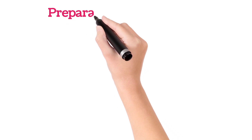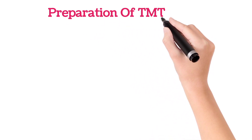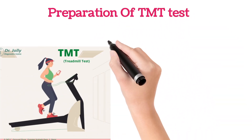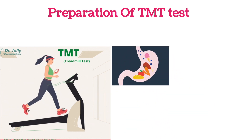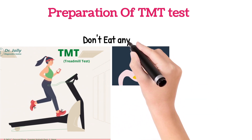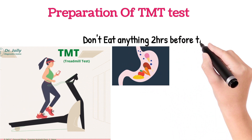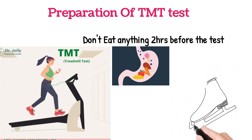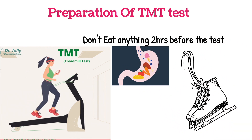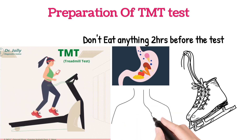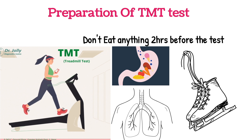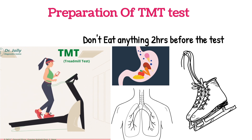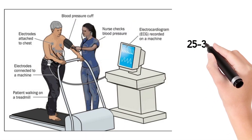Coming to the preparation: as it is a treadmill test, please avoid heavy meals before the procedure, or don't eat anything at least two hours before the test. Please use comfortable shoes. Also, if you are taking blood pressure medications, or if you have severe asthma or chronic obstructive pulmonary disease, please consult the doctor before getting the test done.